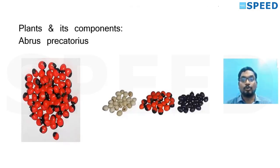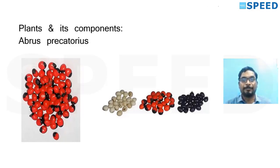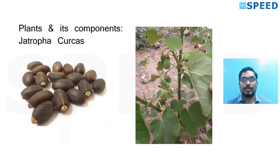Abrus precatorius can also be pure white, pure black, or green with black. The most common Abrus precatorius photo in MCQs is red and black. Less commonly it could be pure white, pure black, or rarely green with black. One clinching point: all Abrus seeds are exactly the same size and weight.